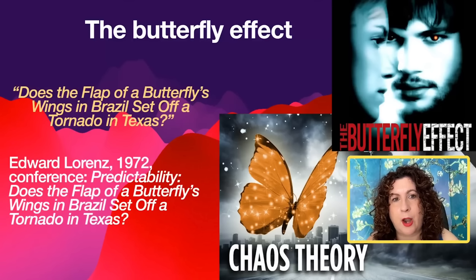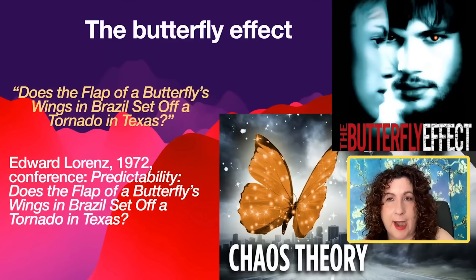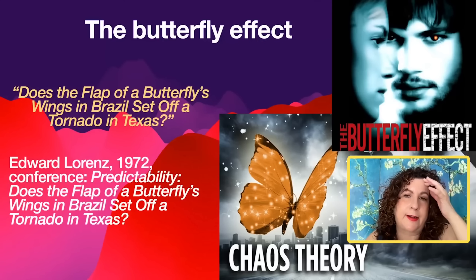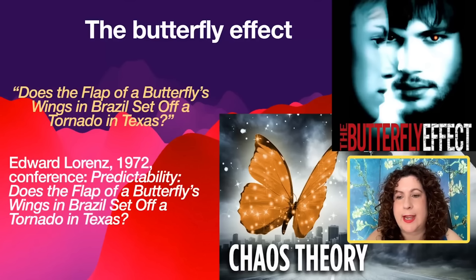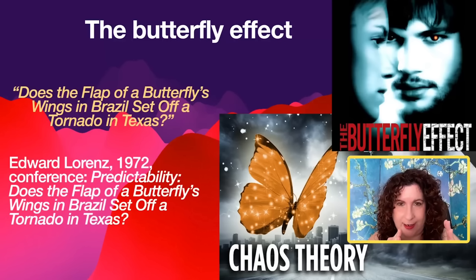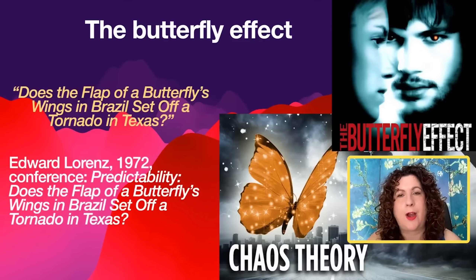Edward Lorenz, in 1972, gave a talk with the title: "Does the Flap of a Butterfly Wing in Brazil Set Off a Tornado in Texas?" This looks like the title of a film, but it's the title of a talk. And indeed, there have been films and books about this idea of chaos. The idea of chaos is precisely the idea that if you go back in time and change the initial conditions slightly — just a tiny little bit — then in the future, the change can be enormous. And that's the idea of chaos.